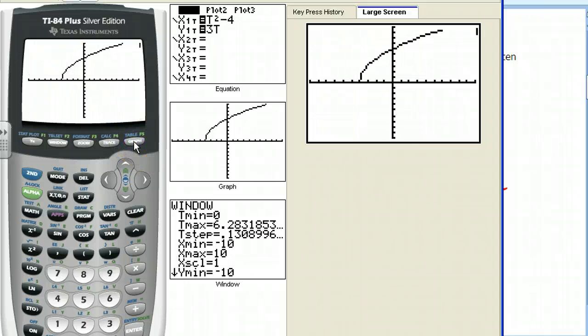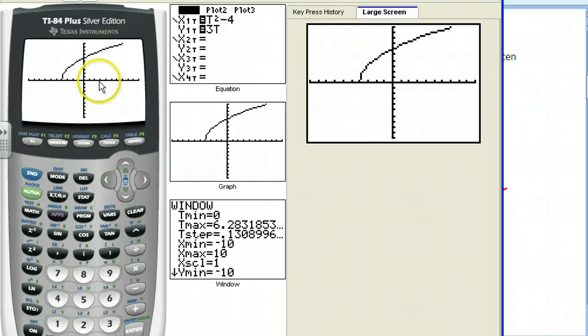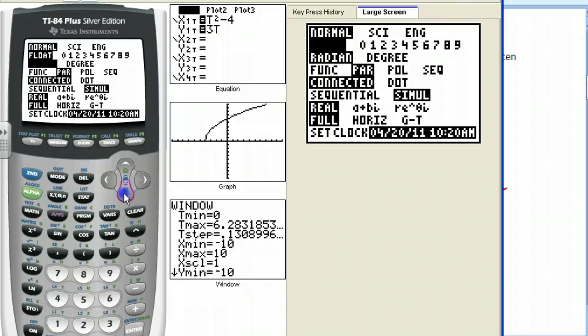So I get t squared minus 4 for my x coordinate, and 3t there for my y coordinate. And if I graph this, I get this curve right here. Now, your window, I just did zoom standard. And so it's going to show up like this. That's good enough for us right now.